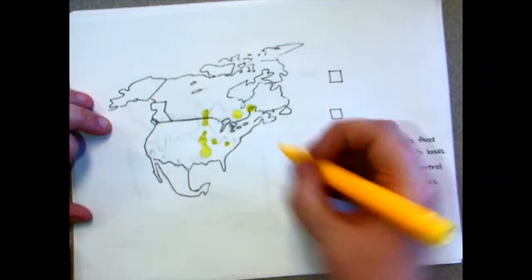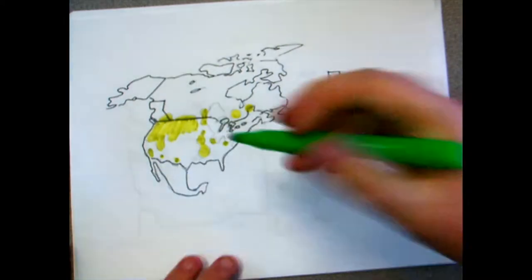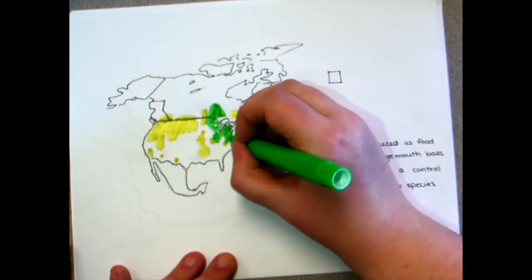Pumpkin seed are native to eastern North America but were introduced in the west and are now invasive. Their native range begins in New Brunswick and extends down the east coast to South Carolina and inland as far as the Dakotas and Manitoba.